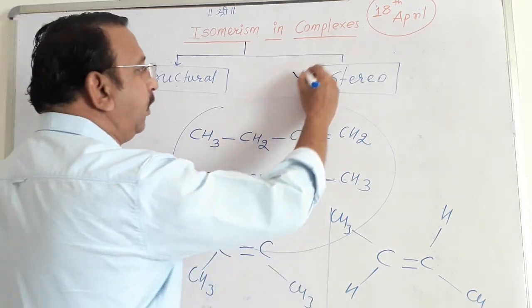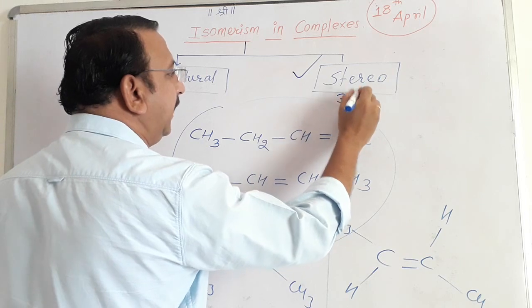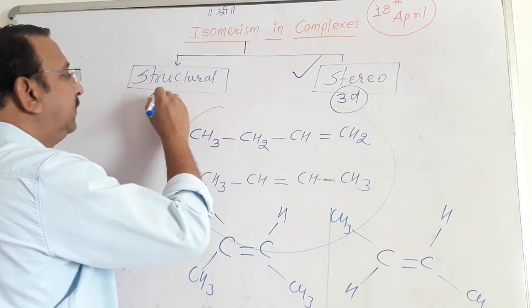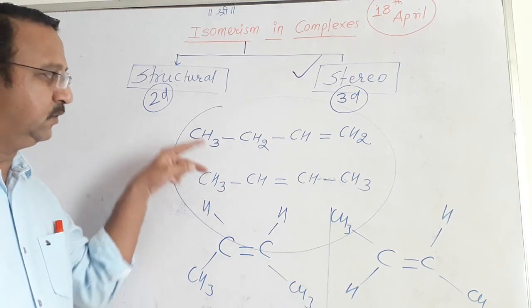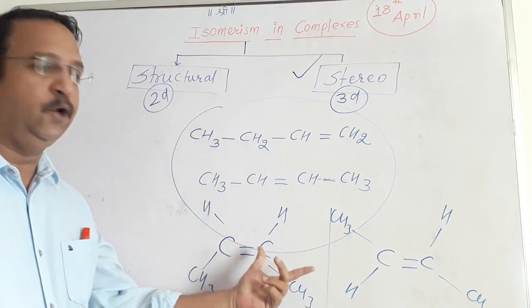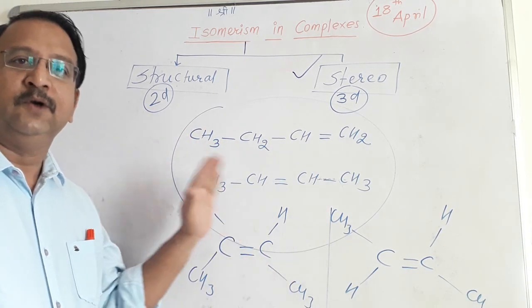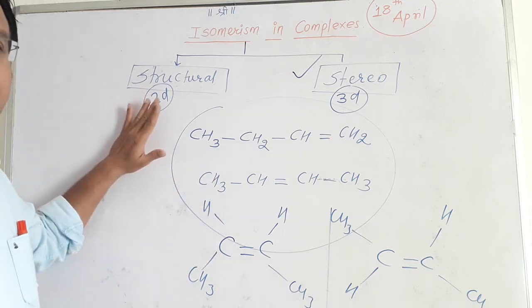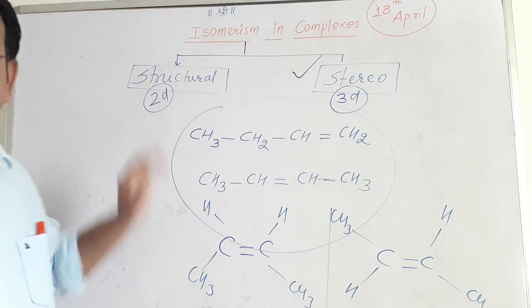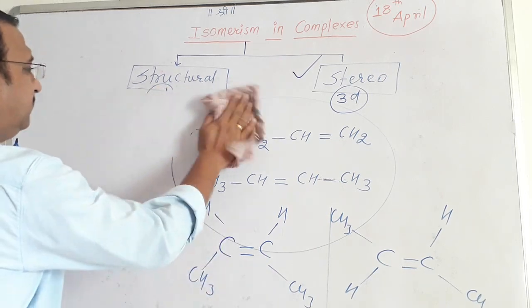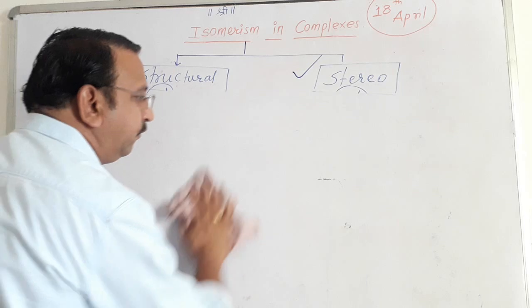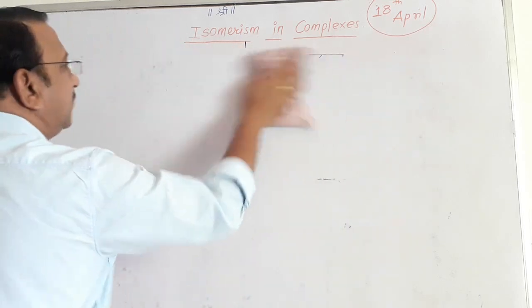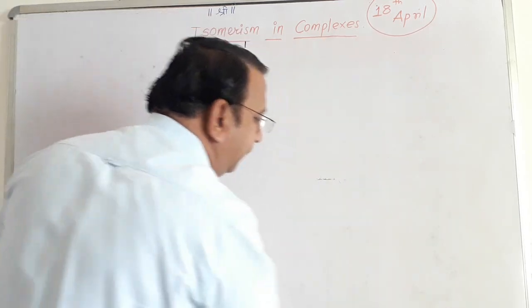So stereo isomers always consider 3D arrangement, whereas structural isomers always contain a 2D arrangement of the molecule. Now we are going to focus on structural isomerism in coordination complexes. I can split it into four different parts.